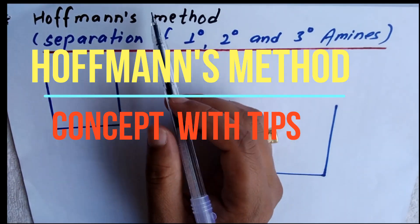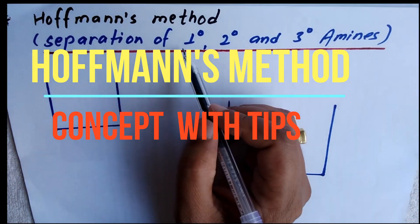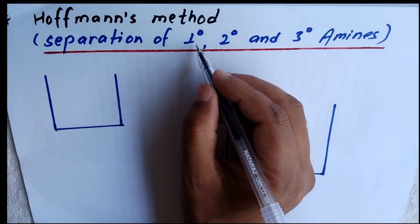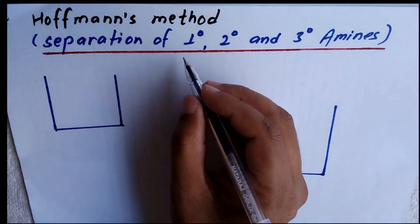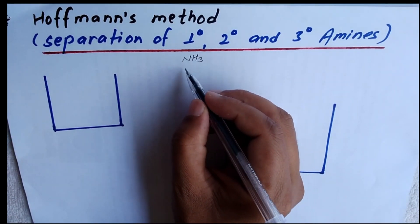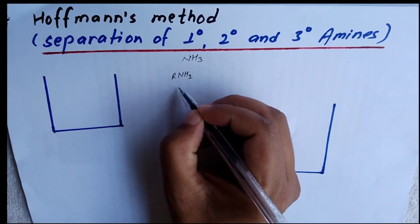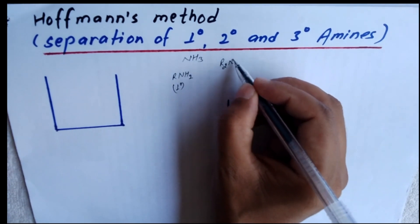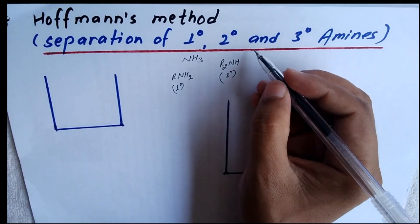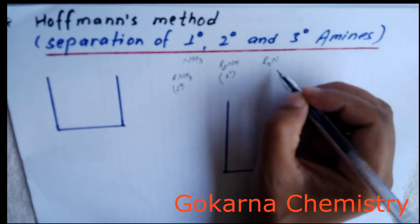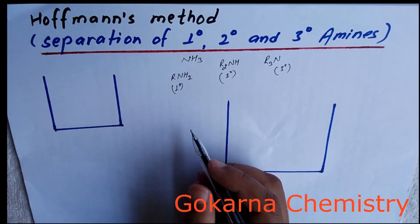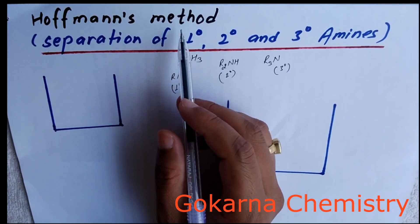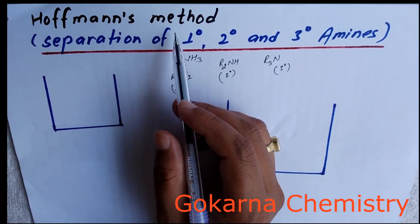Today we are going to study Hofmann's method for separation of first degree, second degree, and third degree amines. Primary amines are derivatives of ammonia. If one hydrogen is replaced by an alkyl group, NH2 is found — this is a primary amine. If two hydrogens are replaced by two alkyl groups, this is called a secondary amine.